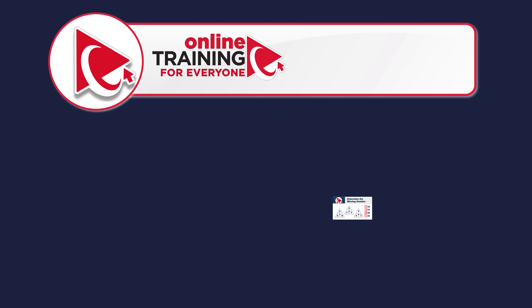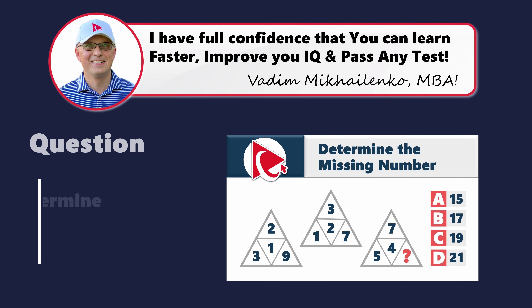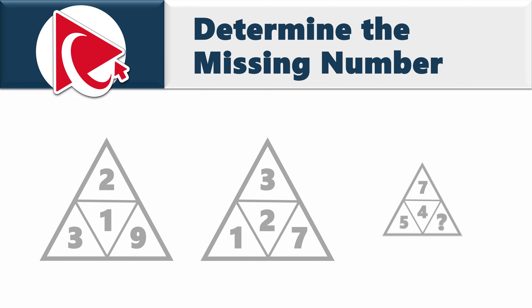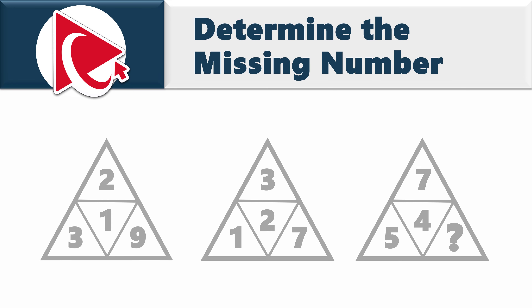Your time to radiate has arrived. You're presented with three triangles with numbers inside. The first triangle has the number 1 in the middle and numbers 2, 9, and 3 on the sides. The second triangle has the number 2 in the middle and numbers 3, 7, and 1 on the sides. The third triangle has the number 4 in the middle, numbers 7 and 5 on the sides, and in the bottom right corner there is a missing number, which you need to calculate and select out of four possible choices.